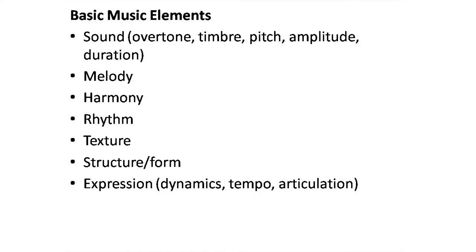Now let us see the basic elements of music. They are: sound, which can be divided into overtone, timbre, pitch, amplitude, and duration; and melody, harmony, rhythm, texture, structure or form, and expression, which can be divided into dynamics, tempo, and articulation. Let us now look at these one by one.